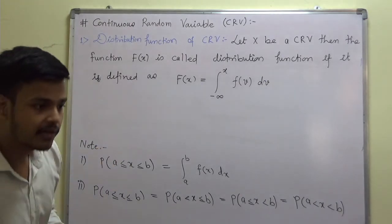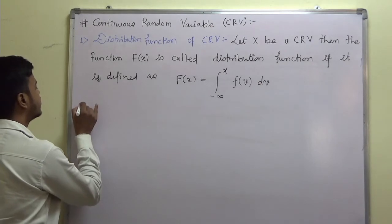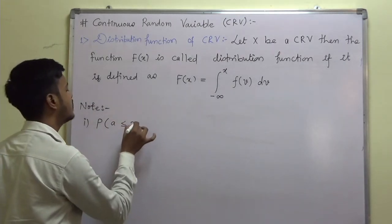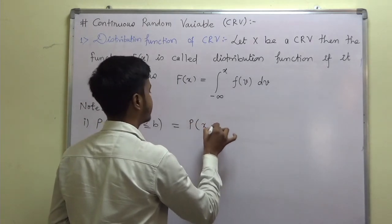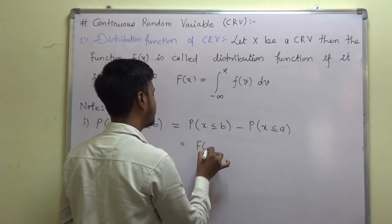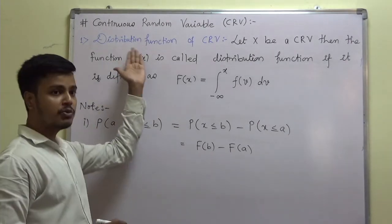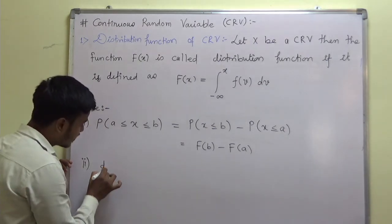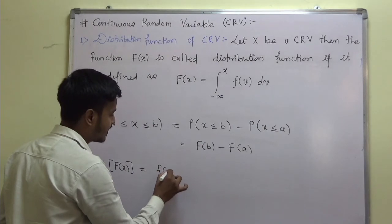Following the same flow as before, let us note that the probability of a ≤ x ≤ b equals the probability of x ≤ b minus the probability of x ≤ a, which is F(b) minus F(a). Also, there is an important relation between the distribution function and the probability function: d/dx of F(x) equals f(x). This is a very handy result when solving problems.